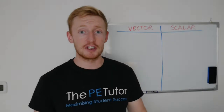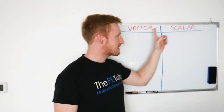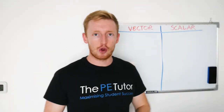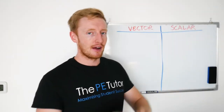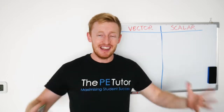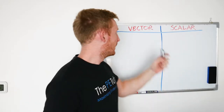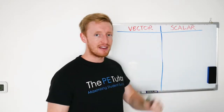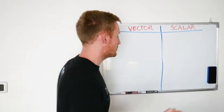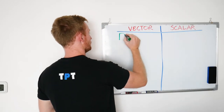Hello, welcome to today's mini-lesson. We are going to be looking at vector and scalar quantities today. Now the first word, and the key word, that you need to remember in order to ascertain the difference between these two is direction.